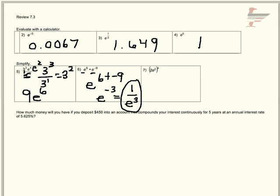And the last one, you have a power, so you distribute that to everything inside. So you're going to have 2 to the 4th, and e to the power on a power, you multiply. And 2 to the 4th is 16.